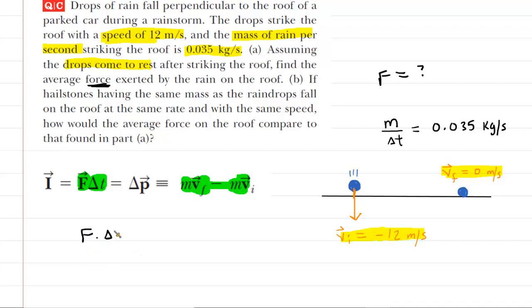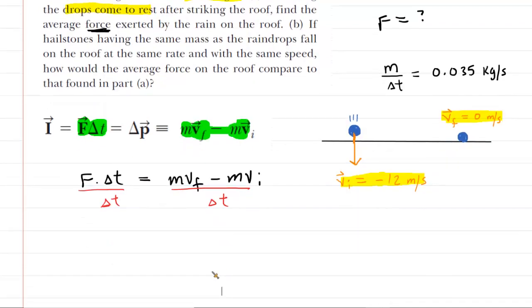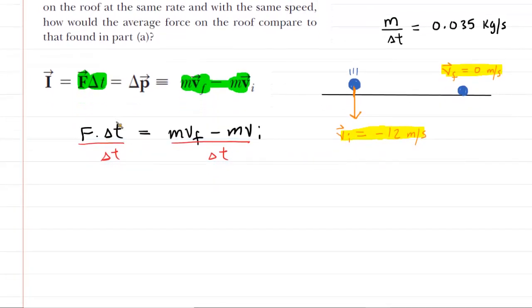And then what we want to do is solve for the quantity that we are trying to determine, which is that force. And so to do that, we can actually divide both sides of this equation by delta t. And as we will see in a moment, by doing that, we're going to be able to come up with an expression for that m over delta t.